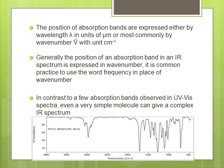We have already discussed UV-visible spectroscopy, where we got only a few peaks. Comparing IR spectra with UV-visible spectra, the IR spectrum is much more complex. Even a very simple molecule can give a complex IR spectrum. For example, the spectrum of ethyl benzoate shows a large number of absorption bands.